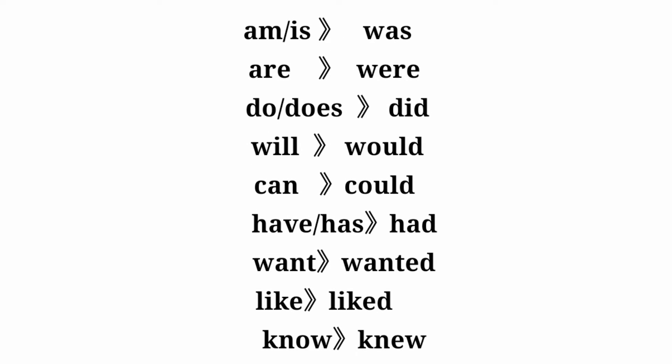The tense changes are as follows: am or is changes to was; are changes to were; do or does changes to did; will changes to would; can changes to could; have or has changes to had; want changes to wanted; like changes to liked; know changes to knew.